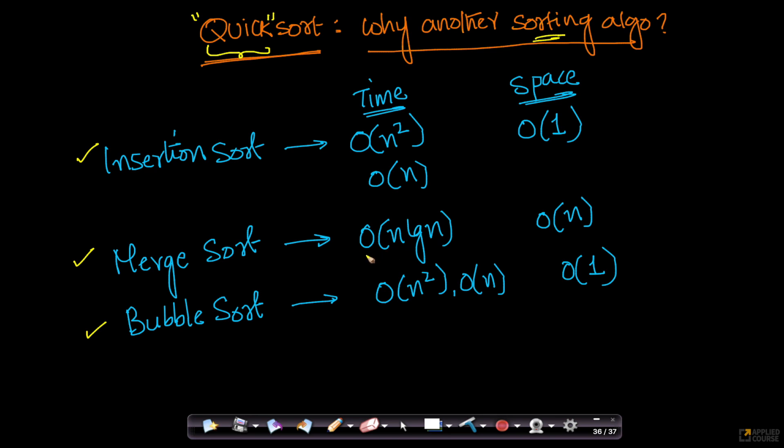Merge sort, on the other hand, has much better time complexity. If you compare merge sort with the worst case of insertion sort and bubble sort, merge sort time complexity is much better because for merge sort, whether it is worst case or best case, it is order of n log n.